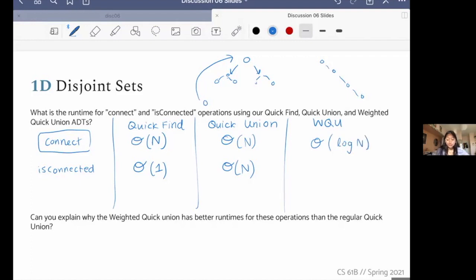And very similarly, is connected will take theta log N because we are just checking the parents of the two elements we're interested in. And so that is the Weighted Quick Union run times.